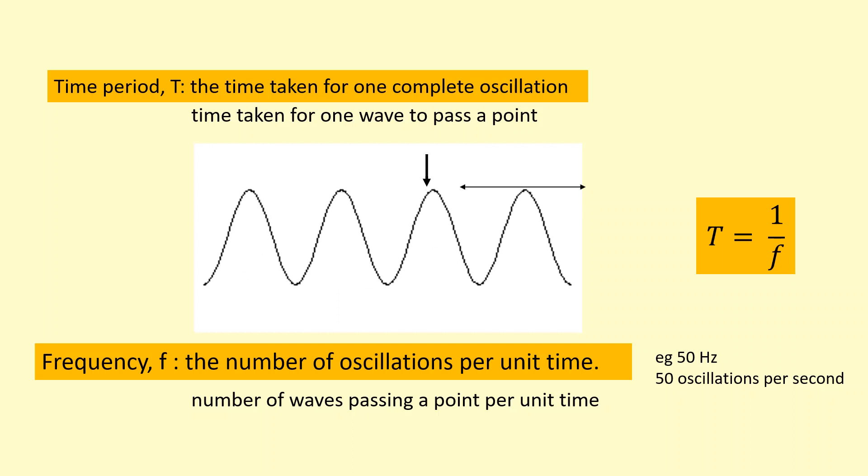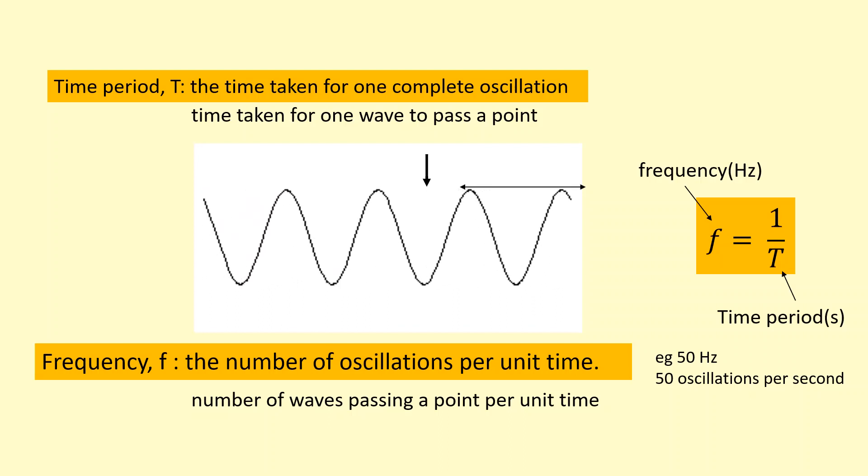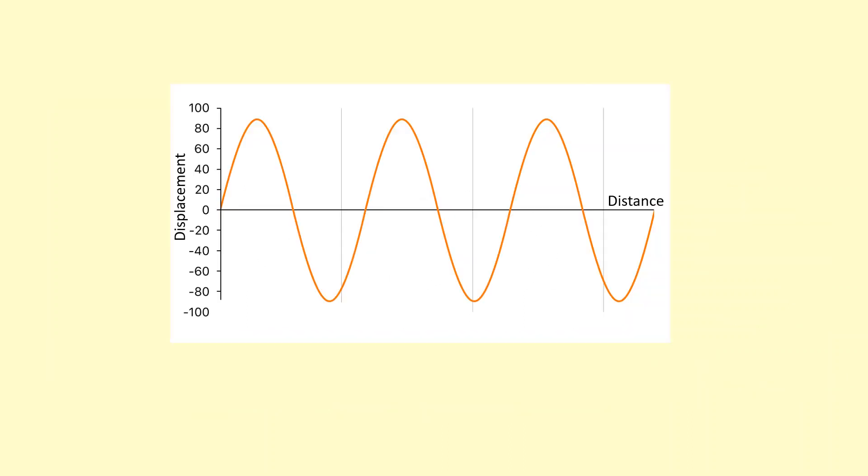Time period and frequency are related using this equation, which can also be written like this. F stands for frequency in Hertz and T (capital T) is time period in seconds. So we saw on a displacement distance graph like this that the distance between two points like these is the wavelength.